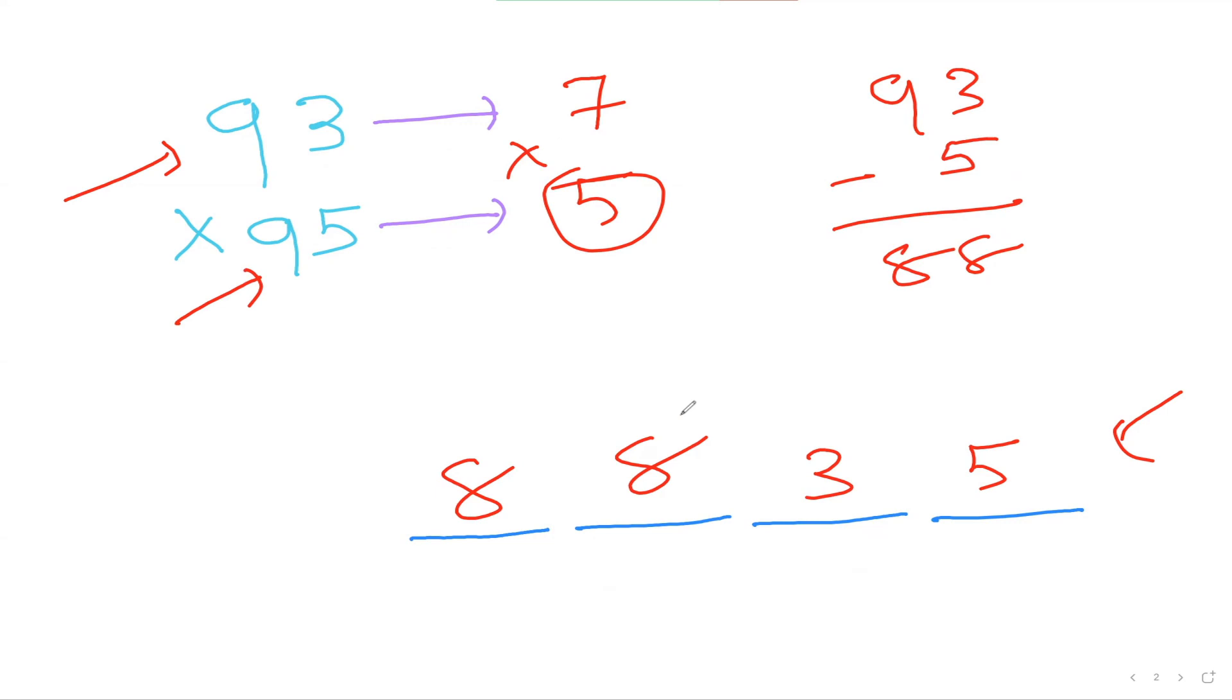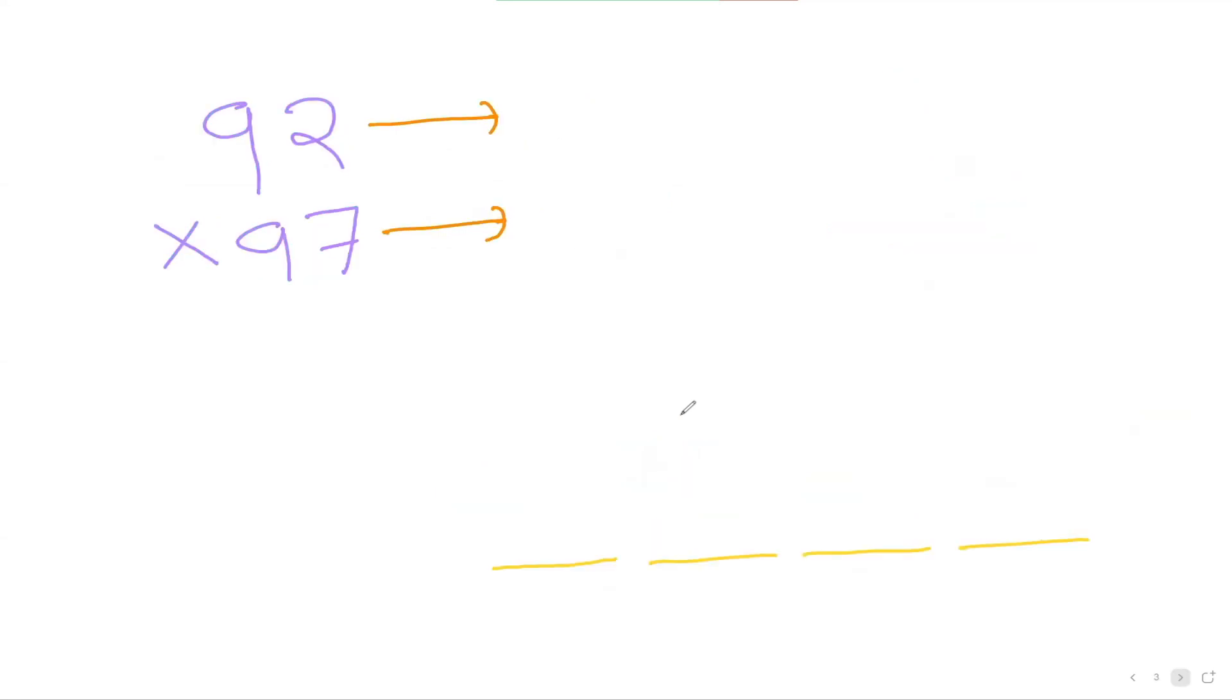Let's run another question guys. It's exciting, right? So 92, difference from 100 is 8. 97, difference from 100 is 3. 8 times 3 is 24. Last two digits, it's 24. Now the difference of 97 and 100 is 3, so I'm going to subtract. 92 minus 3.